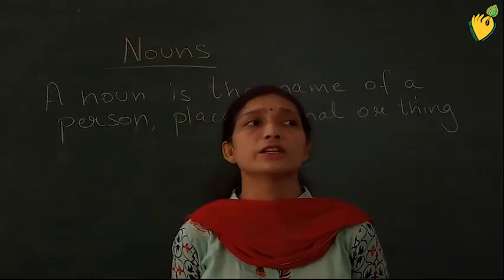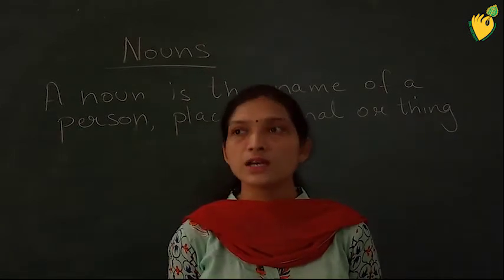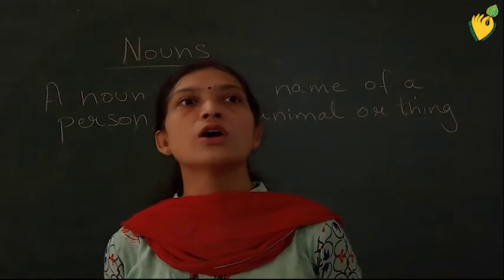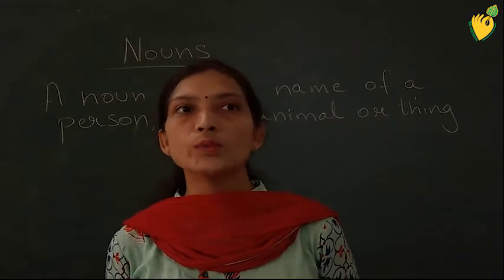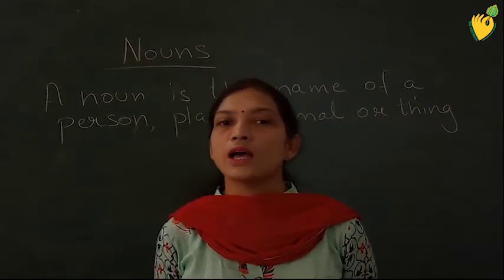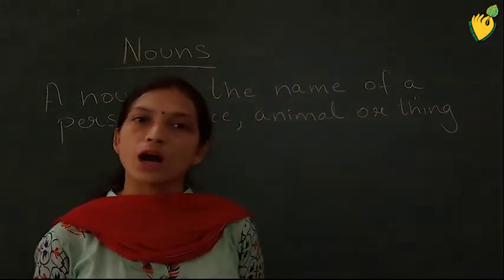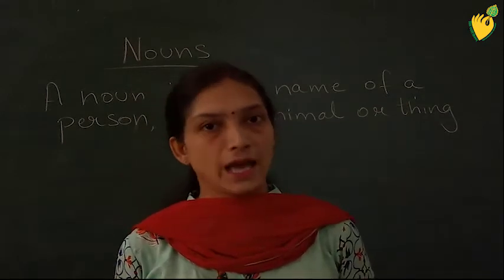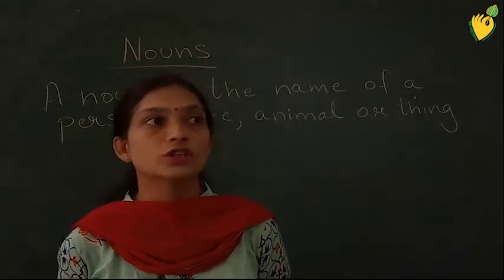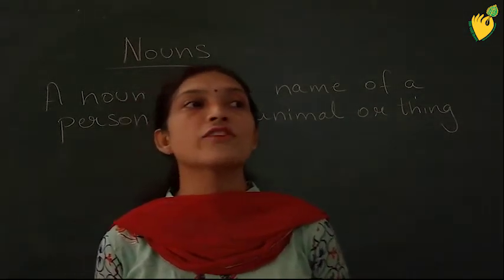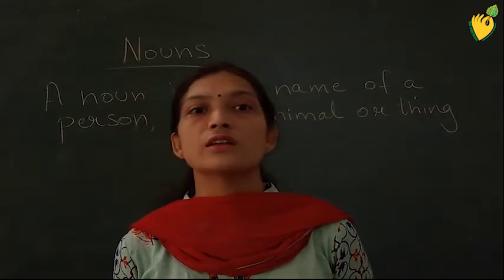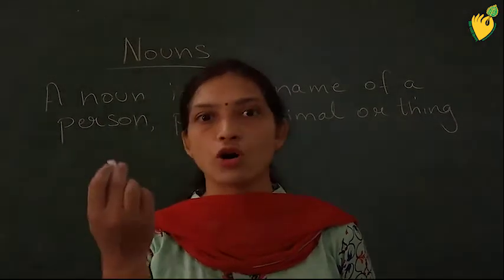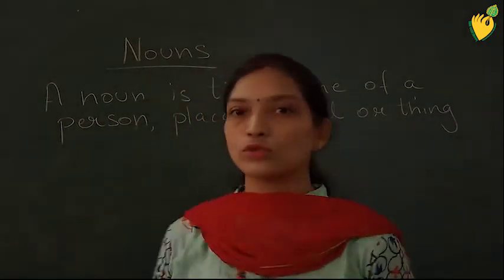Now there can be many places: garden, school, park, home. And for animals there can be cow, dog, cat — these are all names. For things we have fan, table, chair, chalk, blackboard.